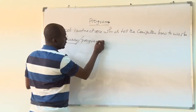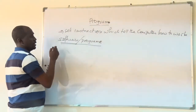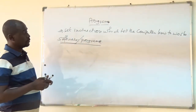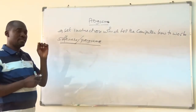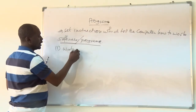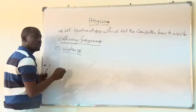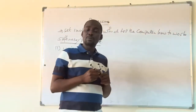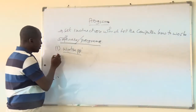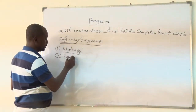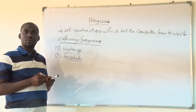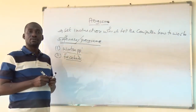Let me give some examples of programs so you understand what programming is. Take for instance WhatsApp — everybody understands the WhatsApp application. WhatsApp is one example of a program or software. Another example is Facebook, which is also an example of a program or software.